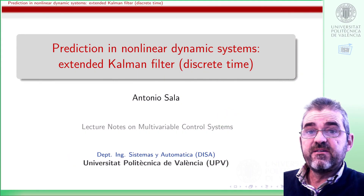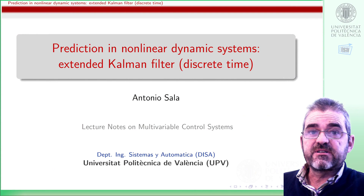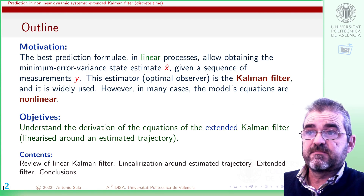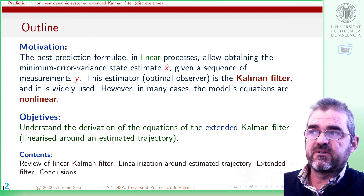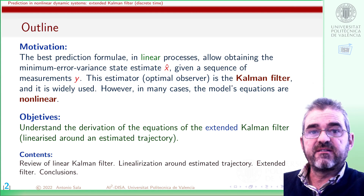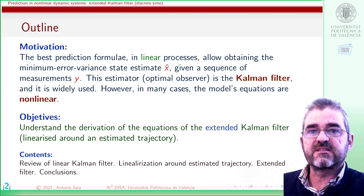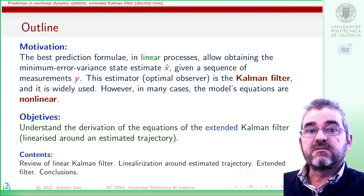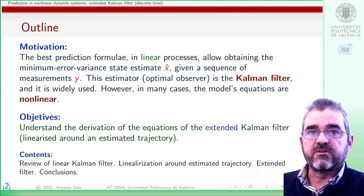I'm Antonio Sala. In this video we are going to discuss prediction in nonlinear dynamic systems with a method called extended Kalman filter. In linear processes there is a famous best prediction formula which obtains the minimum variance state estimate given a sequence of measurements. That formula is the widely used Kalman filter, but in many cases the model is nonlinear.